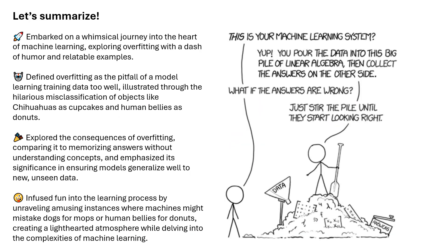We are now at the end of this short presentation — let's summarize. We embarked on a whimsical journey into the heart of machine learning, exploring overfitting with a dash of humor and relatable examples. We defined overfitting as the pitfall of a model learning training data too well, illustrated through the hilarious misclassification of objects like chihuahuas as cupcakes and human bellies as donuts. We explored the consequences of overfitting, comparing it to memorizing answers without understanding concepts, and emphasized the significance of ensuring models generalize well to new unseen data.